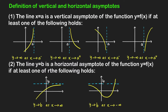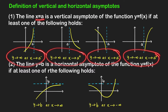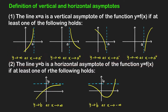Or as x approaches a from the left, the y values approach negative infinity, meaning the function values decrease without bound. Or as x approaches a from the right, the function values decrease without bound. As long as we satisfy at least one of these cases, we can conclude that the vertical line x equals a is a vertical asymptote of the function y equals f of x.